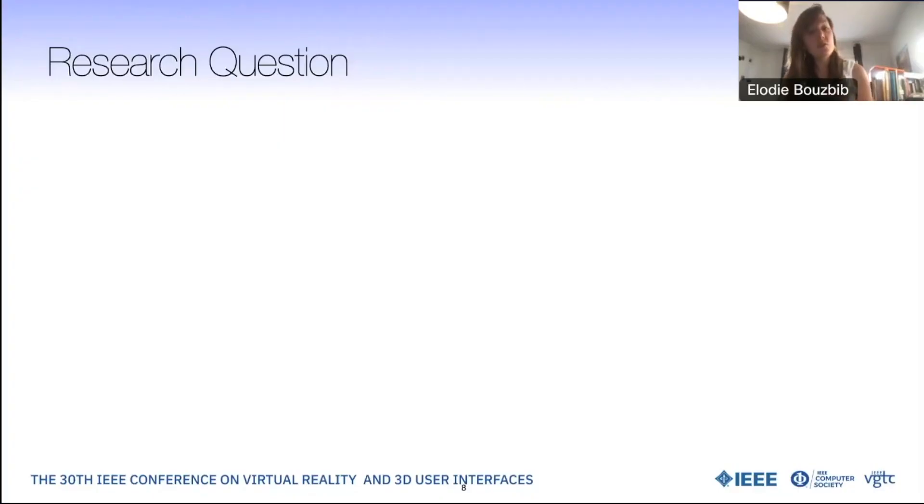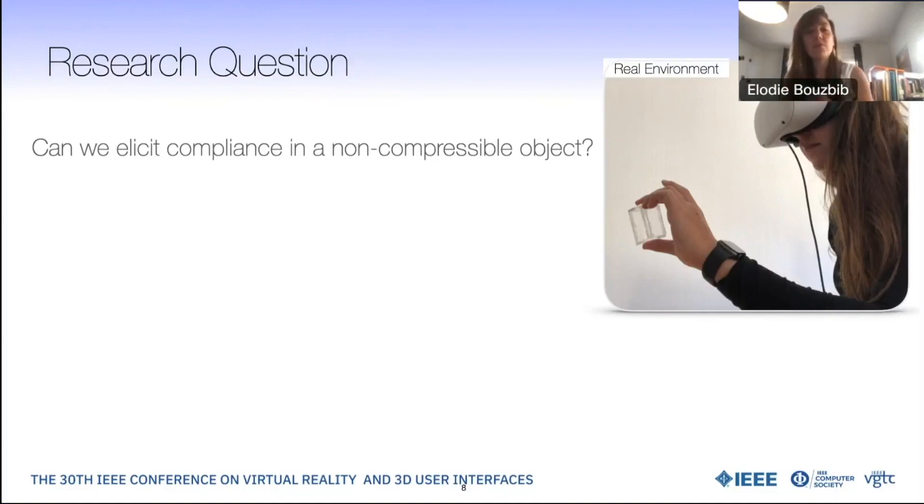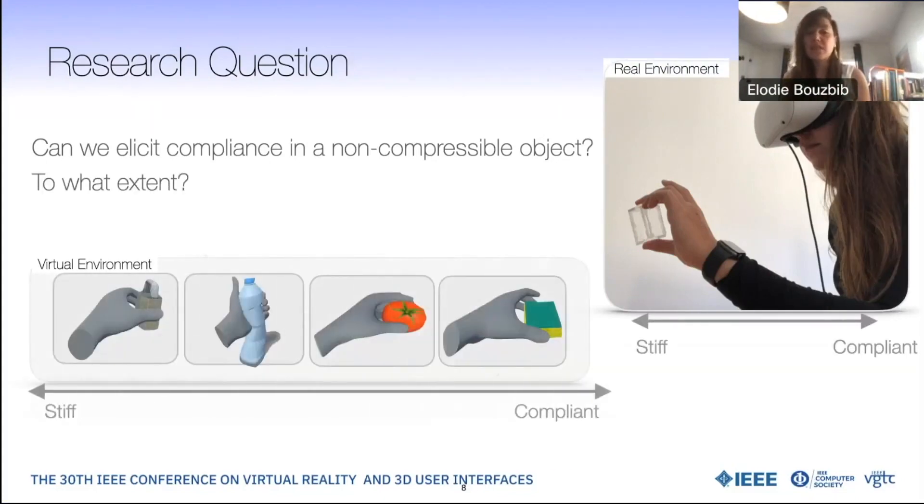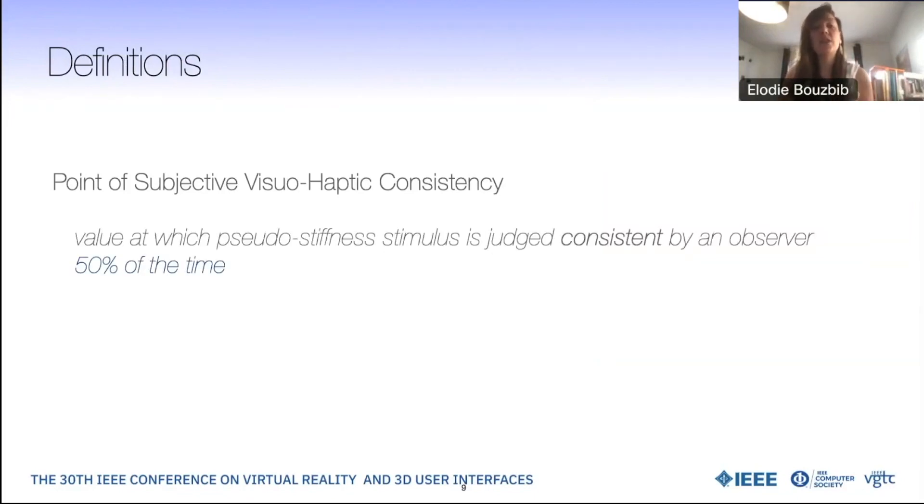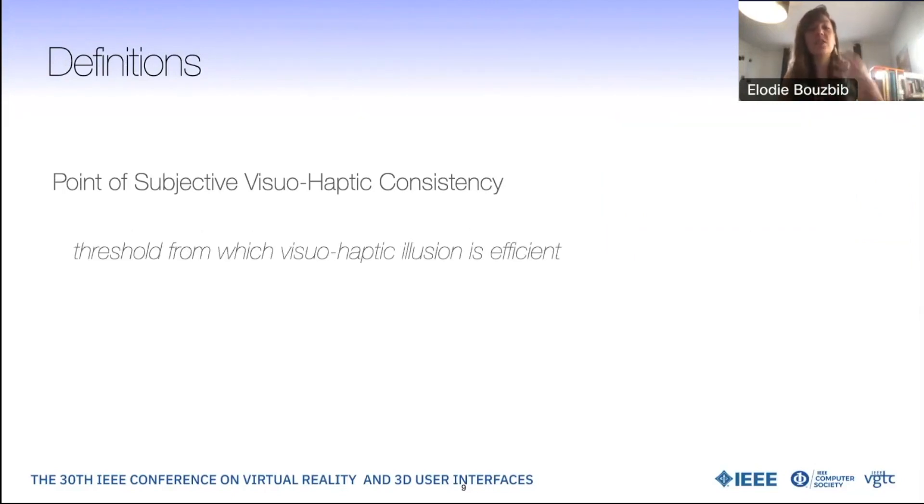The questions of this work are can we elicit compliance in a non-compressible object? And if so, to what extent? We define here the point of subjective visual haptic consistency as the value at which pseudo-stiffness stimulus is judged consistent by an observer 50% of the time. It's basically the threshold from which visual haptic illusions are indeed efficient. We also define the visual haptic consistency range as the interval in which the illusion is efficient.